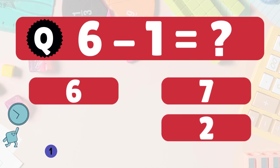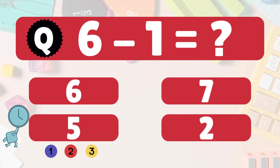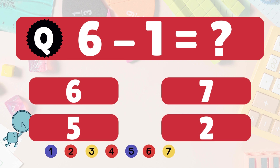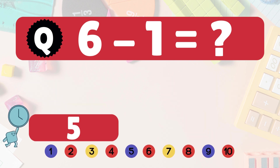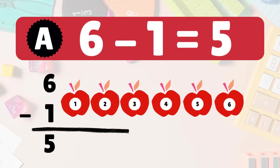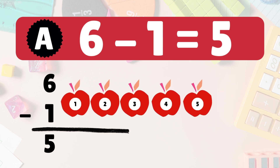Next: 6 minus 1 equals what? 6 minus 1 is 5. Here we have 6 apples. Take 1 away. 5 apples left: 1, 2, 3, 4, 5. So 6 minus 1 is 5. You're doing awesome!